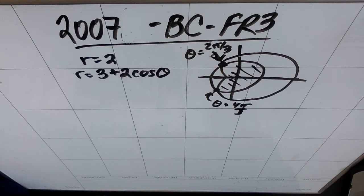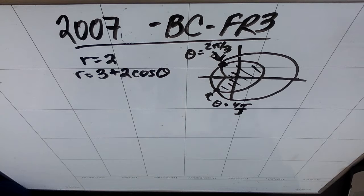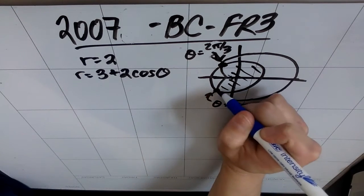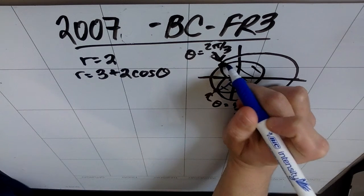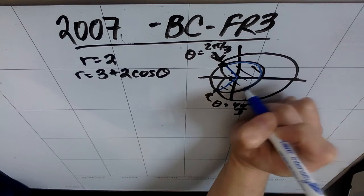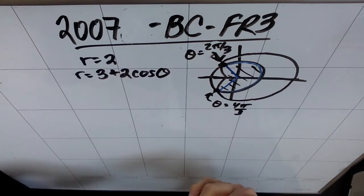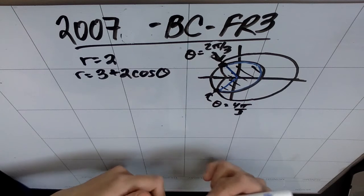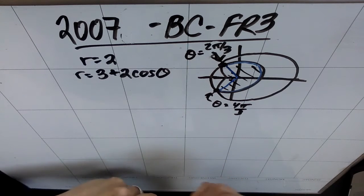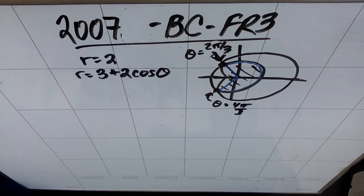Part A: let R be the region that is enclosed in the graph of R equals two and also inside the graph of R equals three plus two cosine theta, which is shaded in this picture. Find the area of R. The trick here is that there are two distinct areas: the Pac-Man area which is inside the circle, and we can find that by recognizing what percentage of the circle it is and multiplying the area by that percentage.